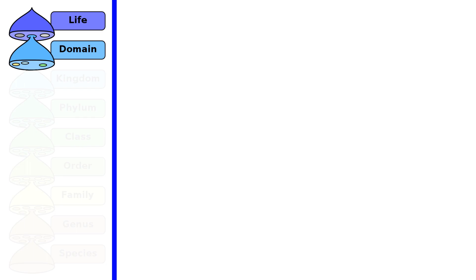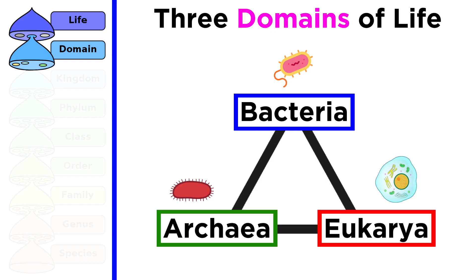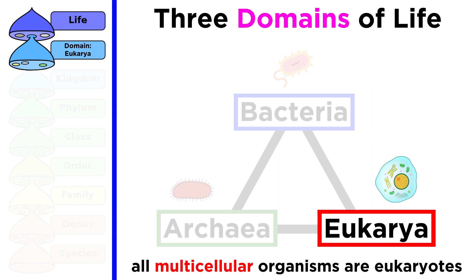The broadest category of classification is a domain. There are three of these, which are bacteria, archaea, and eukarya.